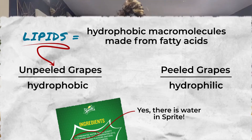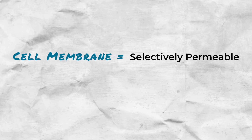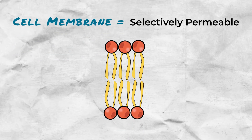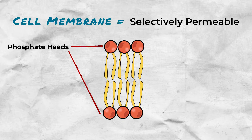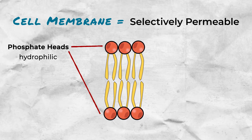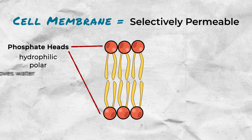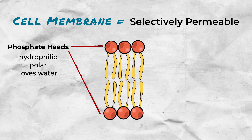A grape can mimic the structure of a cell membrane. Remember, a cell membrane is selectively permeable — certain things could cross, certain things can't. That's because you have the phosphate heads of the cell membrane on the outside being hydrophilic, which means it's polar and it loves water, meaning water can pass through.